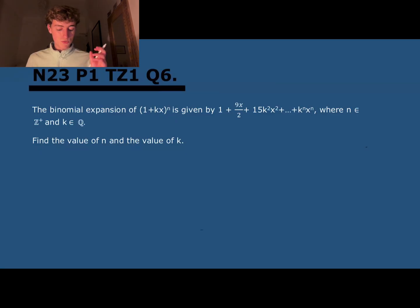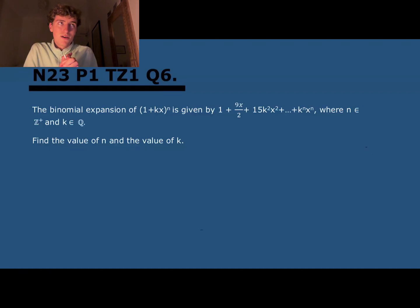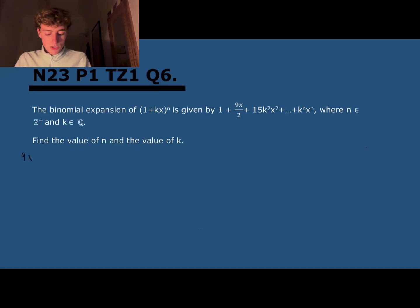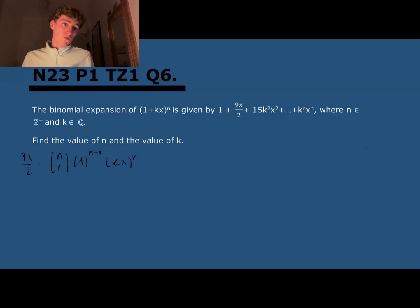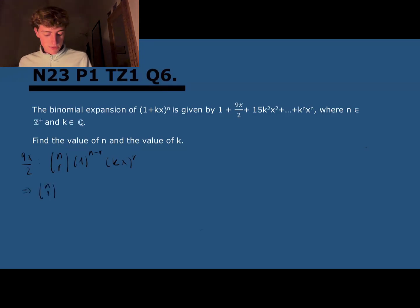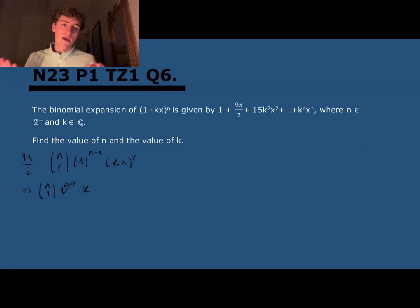Next question on binomial expansions: we're given part of the expansion and don't know what k or n is — we need to find both. Start with the second term, 9x/2. The general term formula is n choose r times 1^(n−r) times (kx)^r. Since x appears to the power of 1 in 9x/2, r must be 1. So we compute n choose 1 times kx.